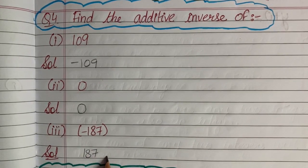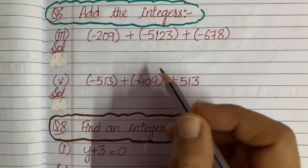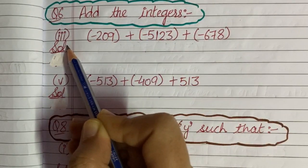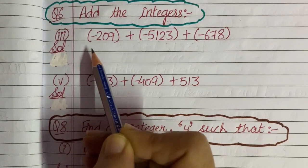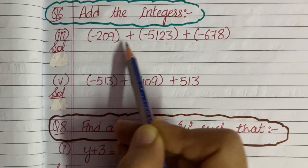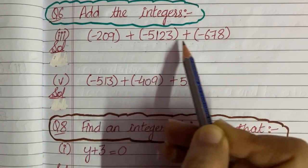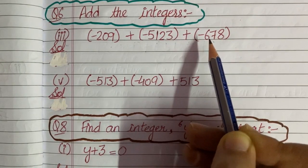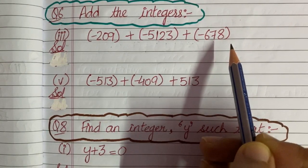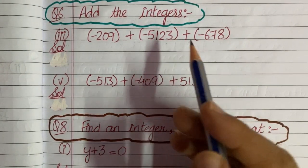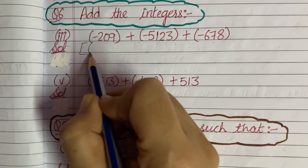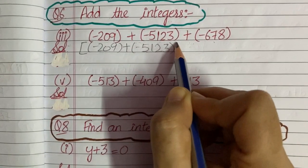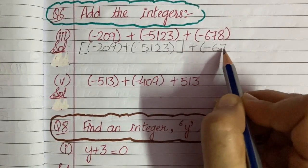Hopefully question number 4 is clear to you. Now question number 6 says: add the integers. I have taken the third part, where we are given three integers: minus 209, plus minus 5123, and plus minus 678. When we are given three integers, we will group two integers. So I am taking in the bracket: minus 209 plus minus 5123, bracket close, plus minus 678.